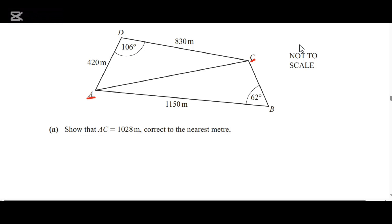AC can be found either using triangle ACB or using triangle ACD. How do you determine which triangle to use? We're going to choose a triangle that has more information to help us find what we are looking for. In this case, we'll choose triangle ACD because we have an angle and two sides given. Let's draw triangle ACD.